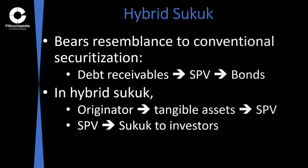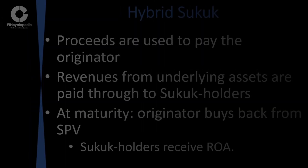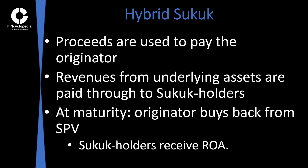In a hybrid Sukuk structure, the originator transfers tangible assets, which are the underlying of different contracts, to the Special Purpose Vehicle. In turn, the SPV issues Sukuk to investors who become the Sukuk holders and receives Sukuk proceeds from them. The proceeds are used to pay the originator, while the revenues realized from the underlying assets are paid through to the Sukuk holders.